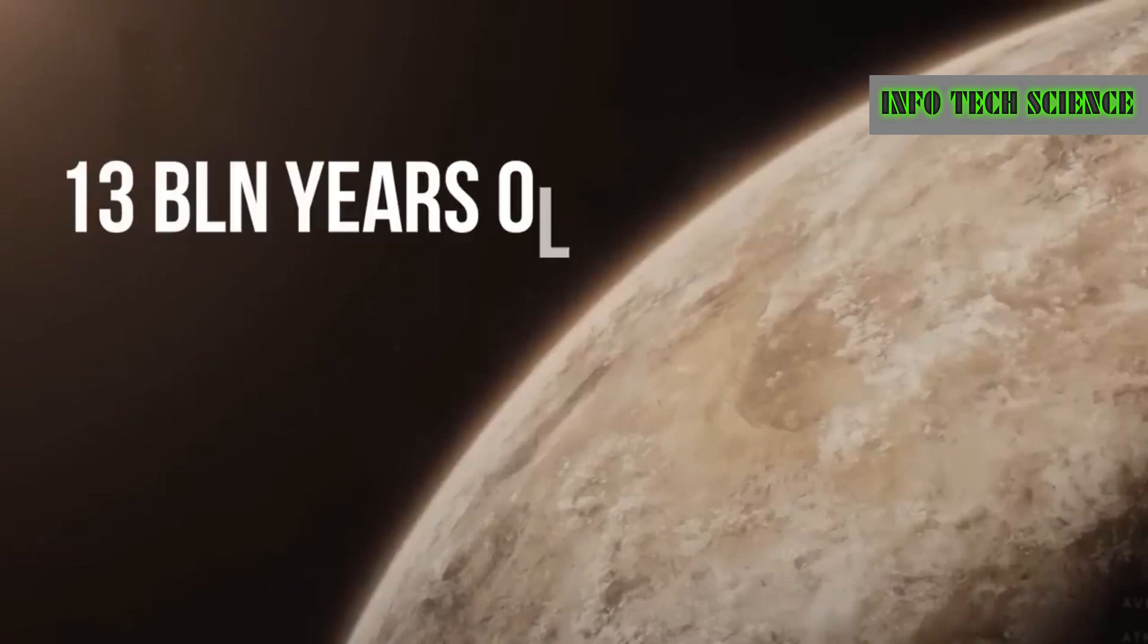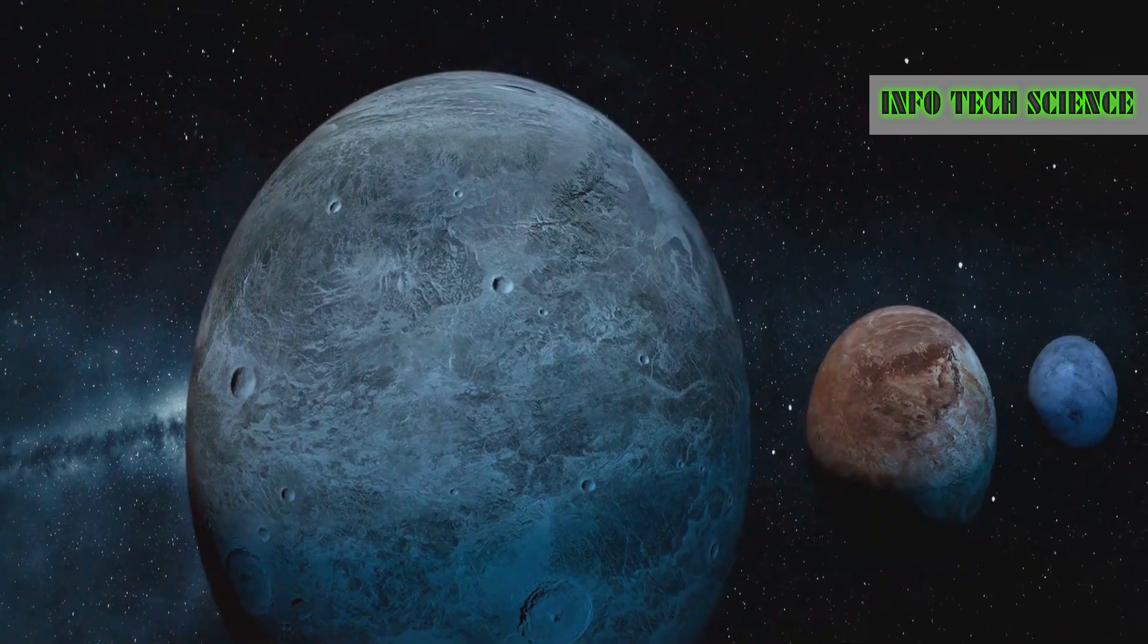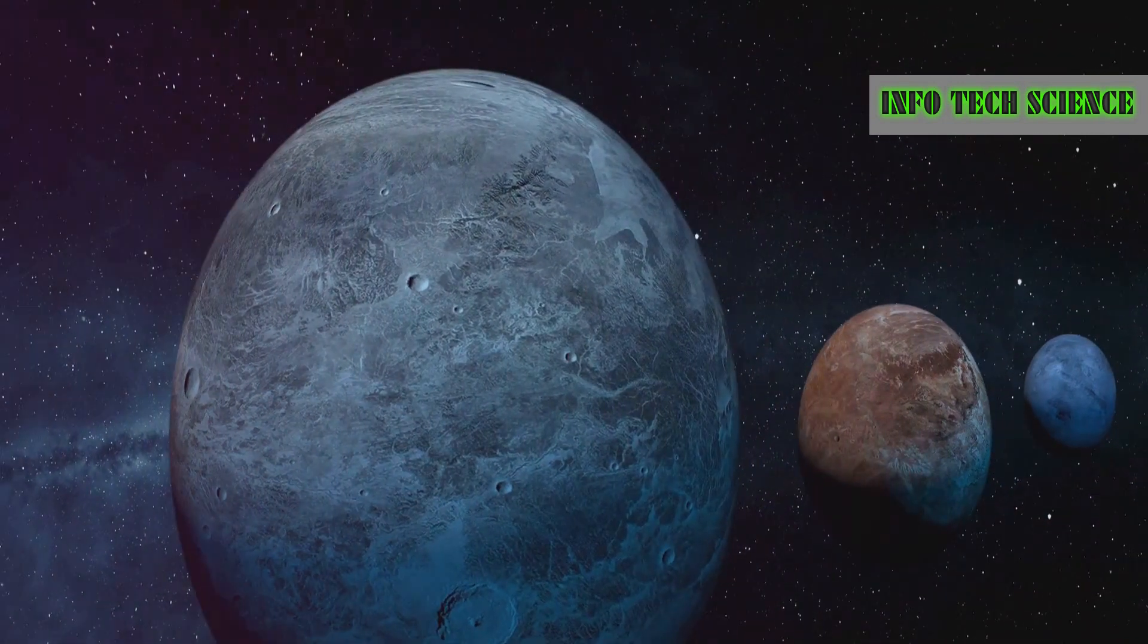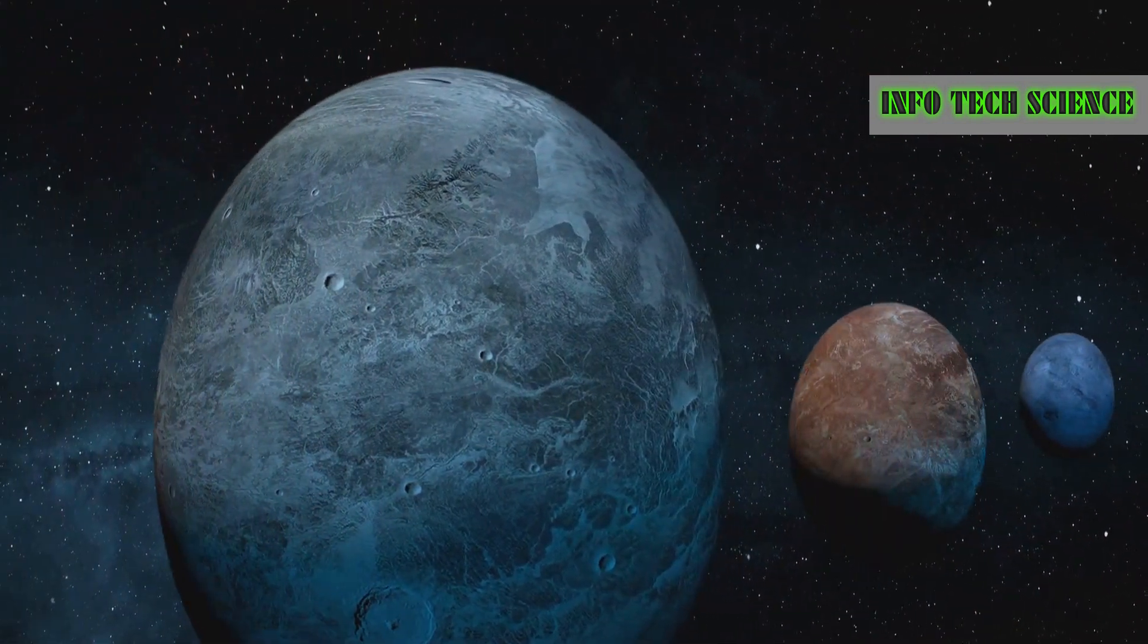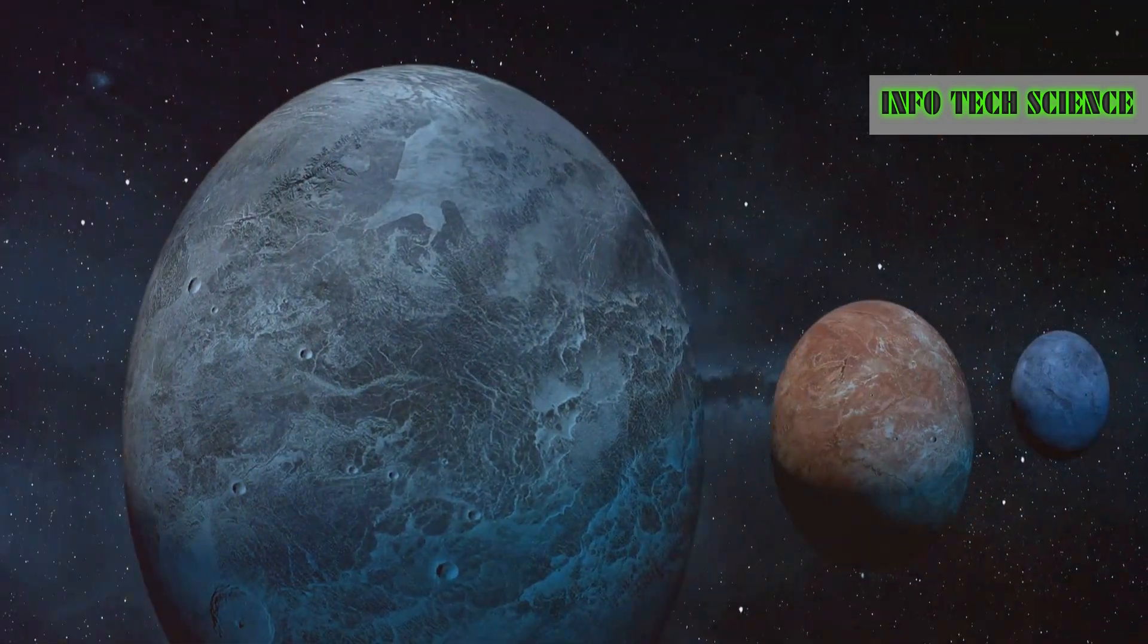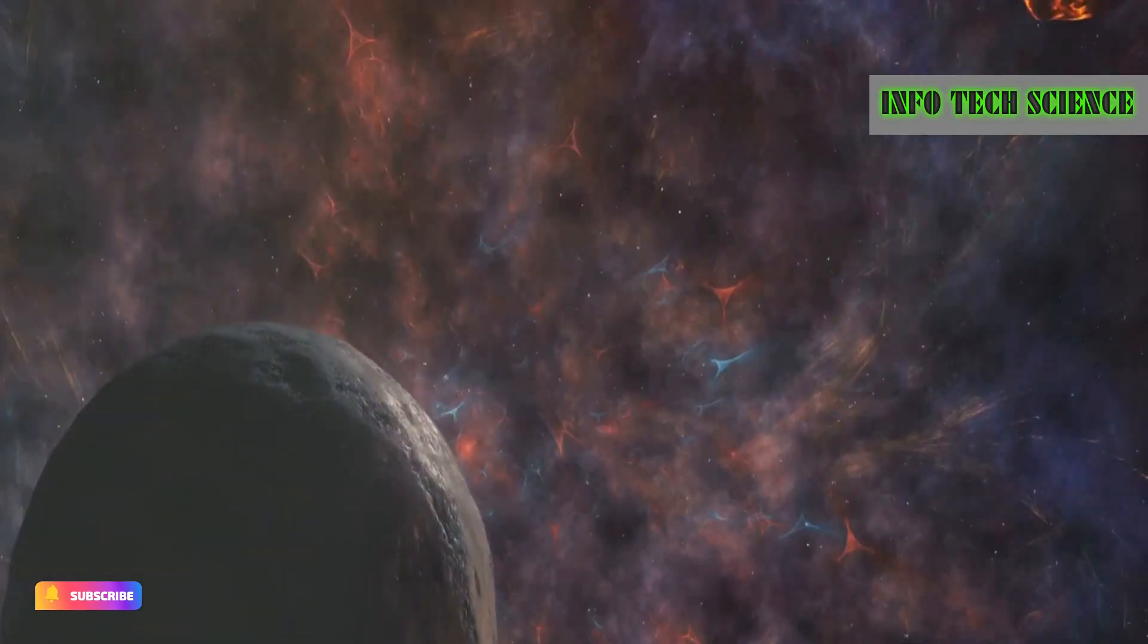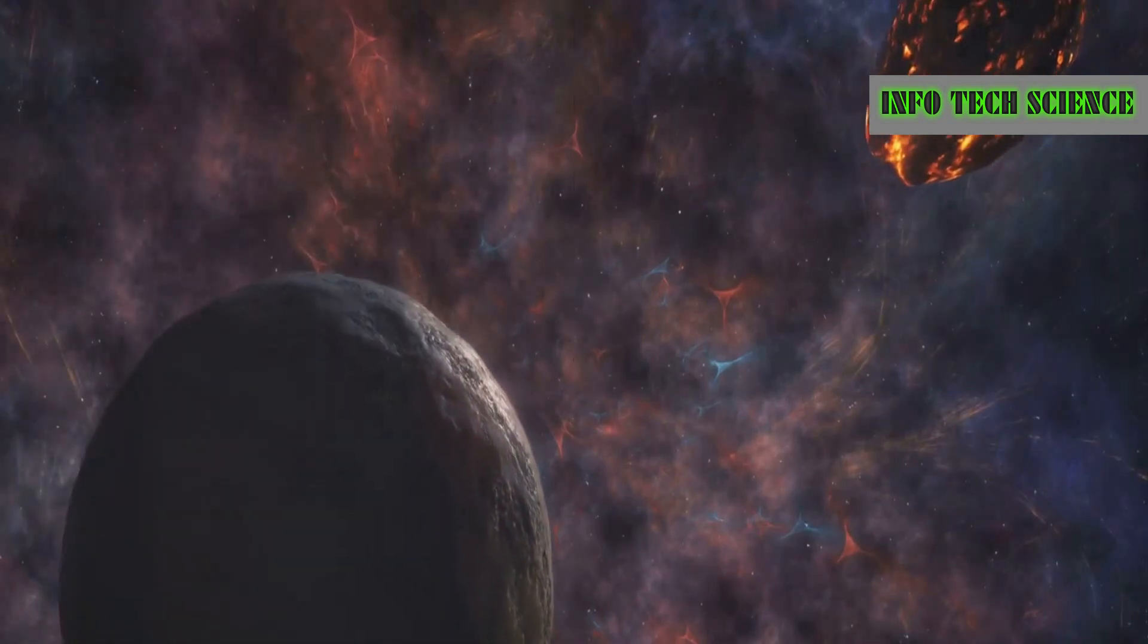Planet Kepler-36b, 1,200 light years away, constantly bullies its younger sister, Kepler-36c. They orbit each other and their star, and when they get too close, the larger planet's gravity and magnetic field trigger earthquakes, volcanic eruptions, and firestorms on the smaller planet. This happens every 97 days and has been going on for thousands of years.